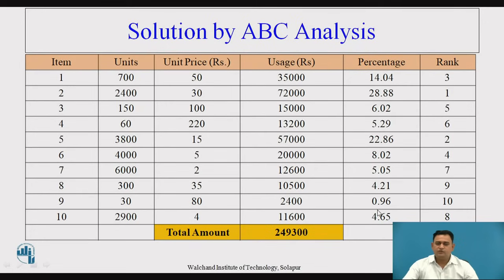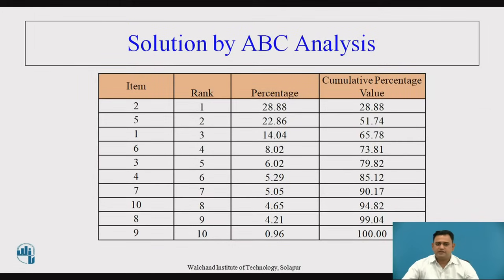Once we obtain the percentage, we rank items from higher to lower. 28.88% is ranked first. The second highest is 22.86%, ranked 2. The next lower is 14.04%, ranked 3. In this way, all items are ranked according to their percentage from highest to lowest. Then we sequence the items by arranging them from the higher level to the lower level.